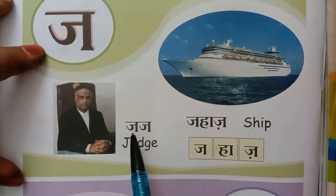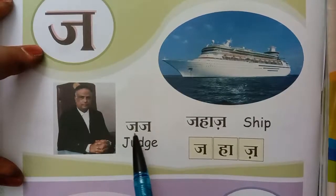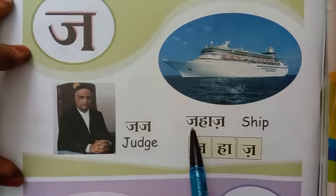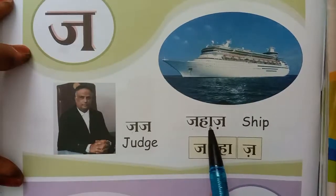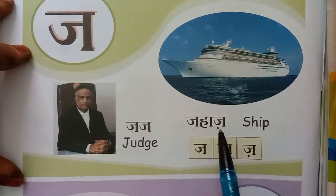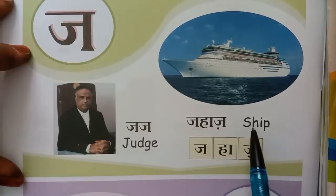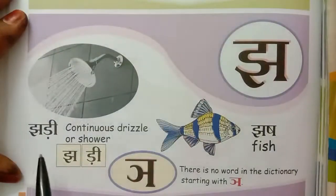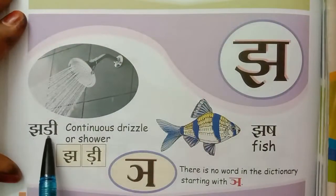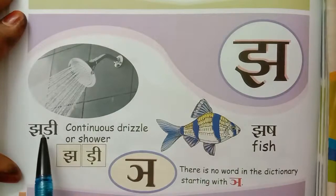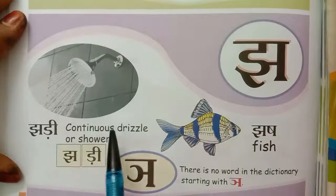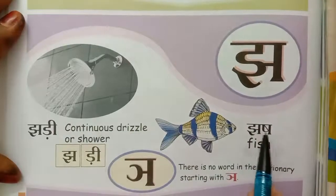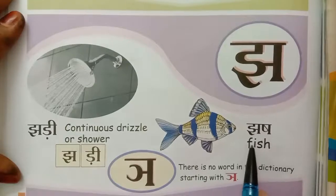Repeat after me children. JA, JA, JAJ — JAJ means Judge. JA, HA — ha ki a ki matra — JAHAZ — JAHAZ means Ship. Next, JA, DA — da ki badi ki matra — JADI — JADI means Shower. JA, SHA — JASH — JASH means Fish.